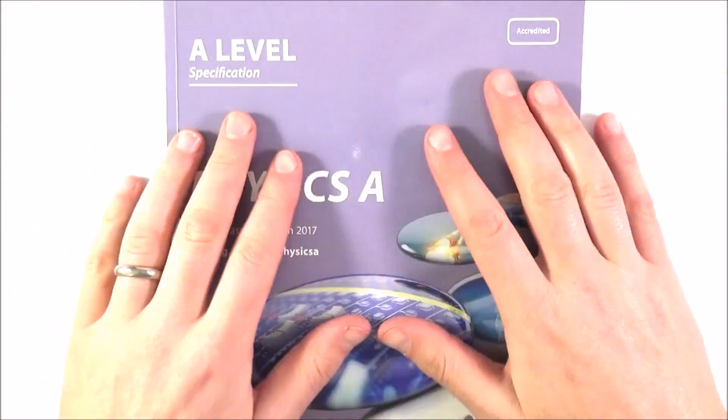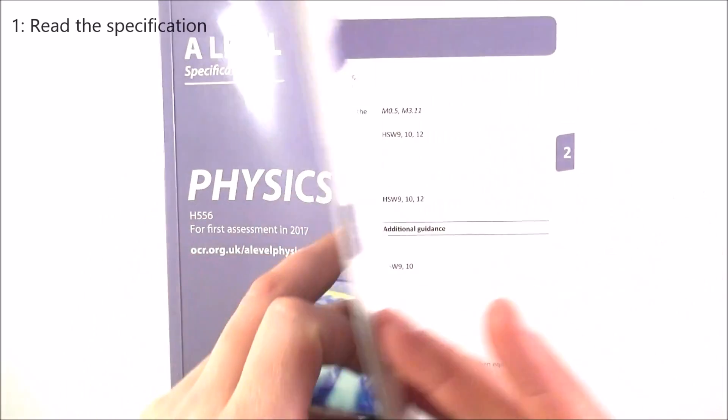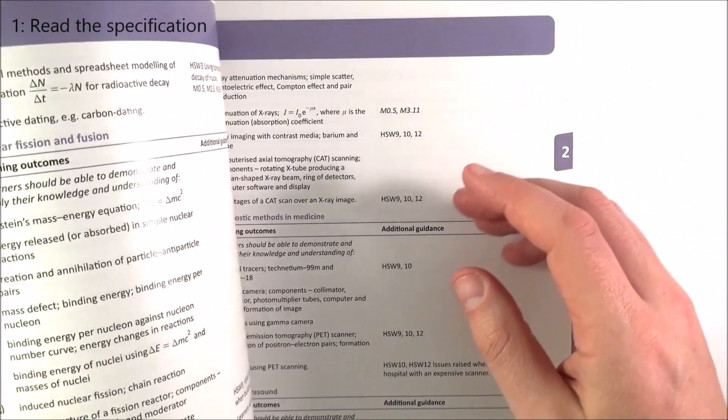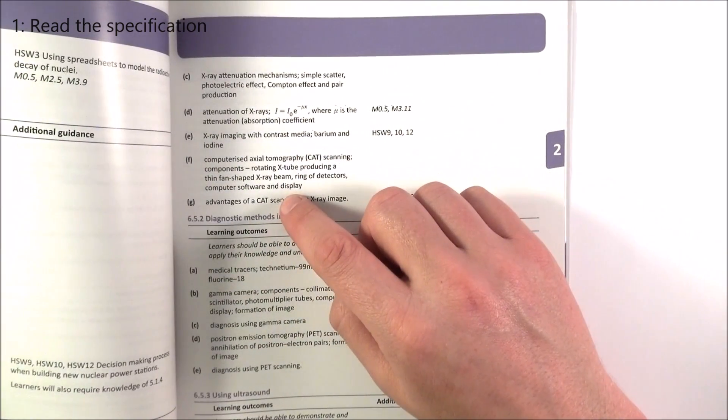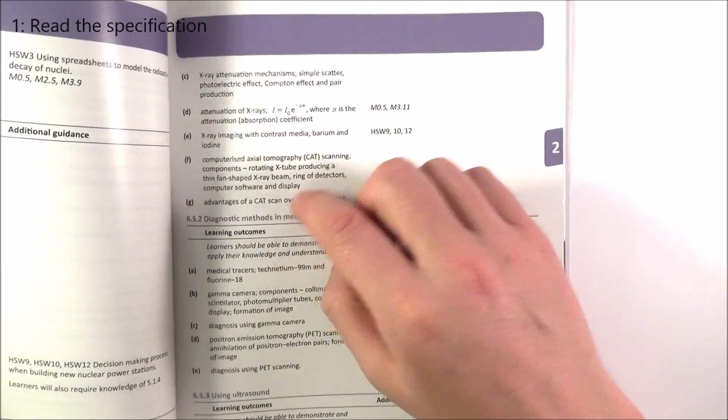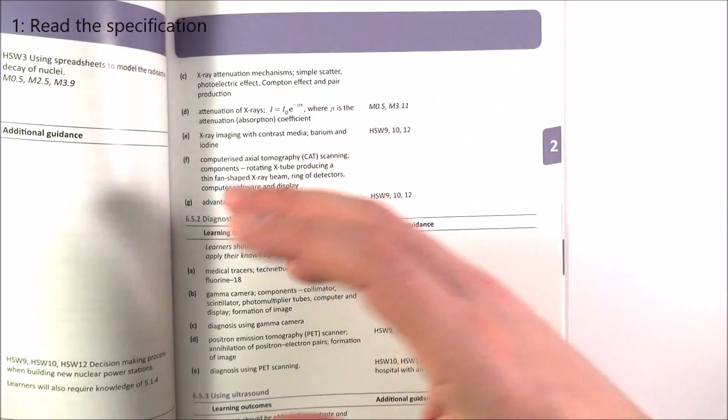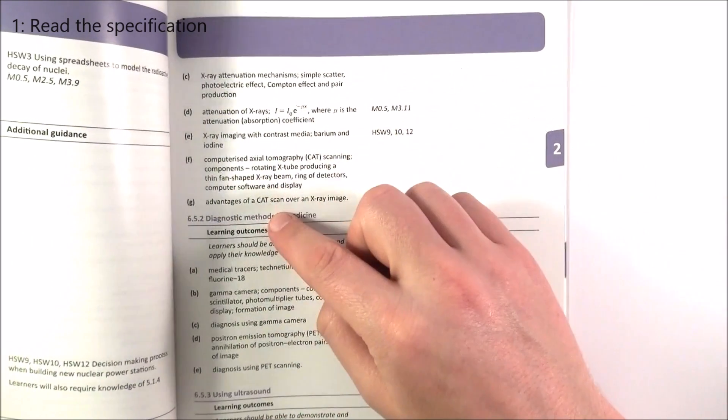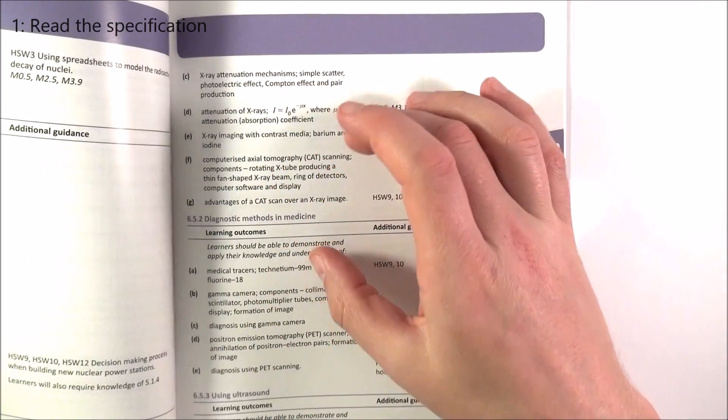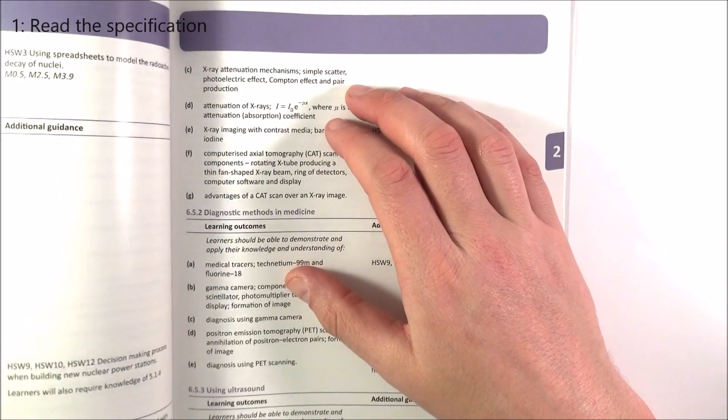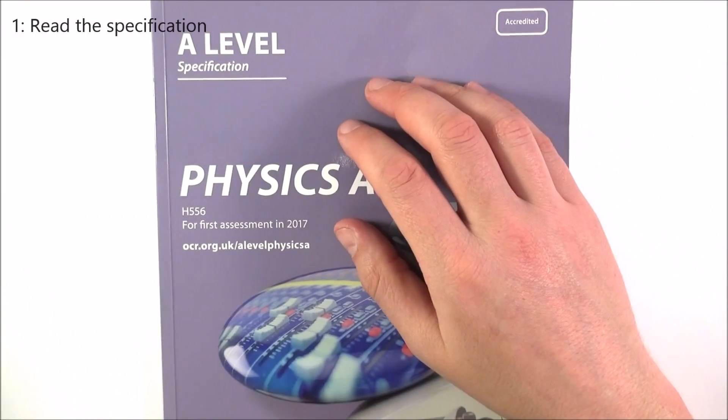The first step is you need to read the specification. This is produced by the exam board, it's always on their website, and it goes through a huge amount of detail about exactly what you need to know. You need to read it, highlight it, and if you're doing OCR specification A, I've got some documents on my website. This has to be the thing that you check that you're doing the right work and revising the right content.